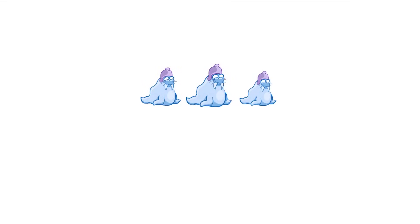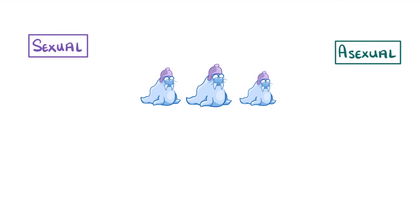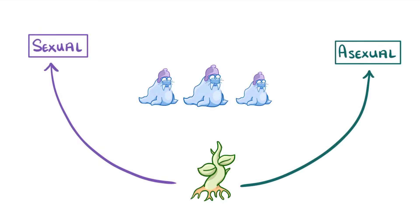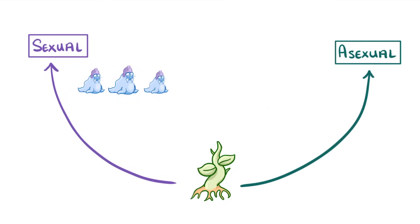In this video, we're going to take a look at the two main ways that organisms can reproduce: sexual reproduction and asexual reproduction. Some organisms, like plants, can reproduce through either of these two routes. However, most animals have to rely on sexual reproduction, and bacteria all reproduce asexually.